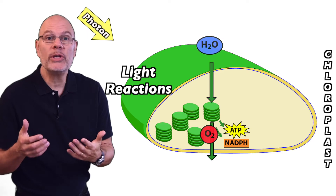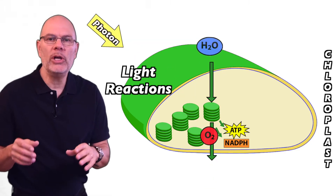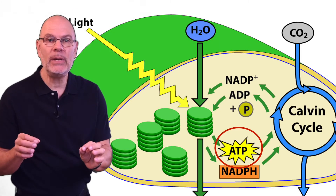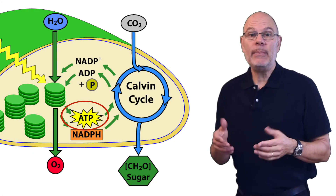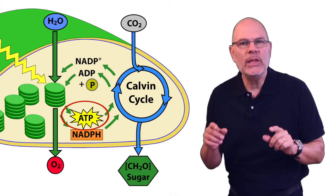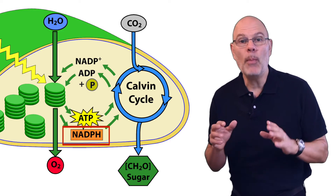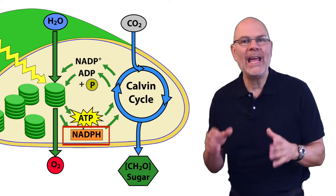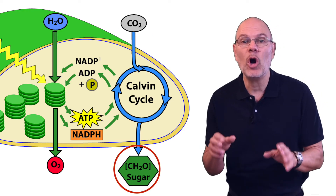Within chloroplasts, photosynthesis occurs in two stages, the first of which is the light reactions. These reactions occur in the thylakoids, which take water and light energy and use them to accomplish two things: making ATP and reducing a molecule called NADP+ into NADPH. The ATP drives an endergonic, or energy-requiring process — in this case, the second phase of photosynthesis, the Calvin cycle. NADPH is a mobile electron carrier. Its job is to bring electrons and hydrogens to the stroma, where enzymes use its reducing power to transform carbon dioxide into carbohydrate.